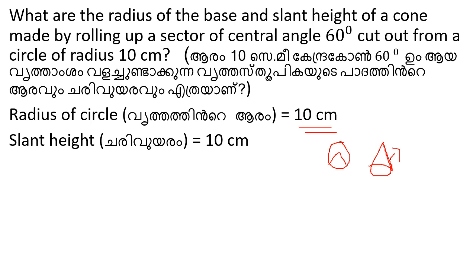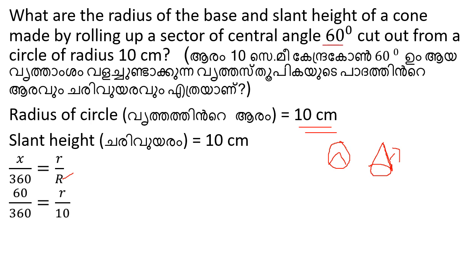Now we use the formula: central angle divided by 360 equals base radius r divided by slant height l. When the slant height is 10, the base radius formula gives us: 60 by 360 is equal to r by 10.